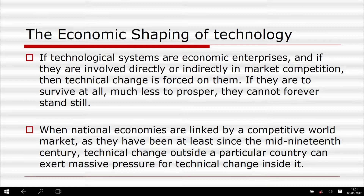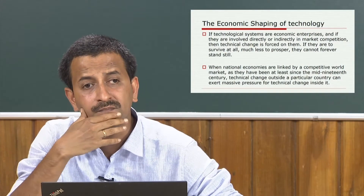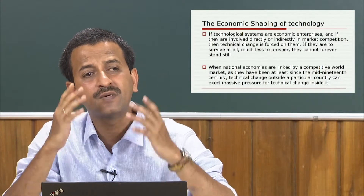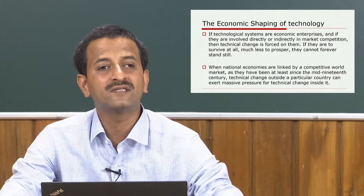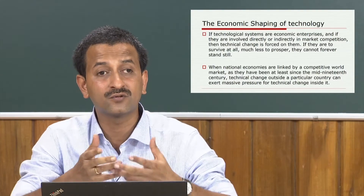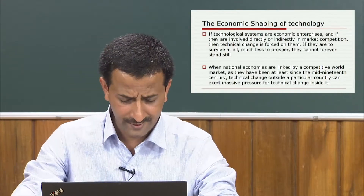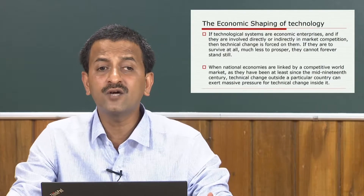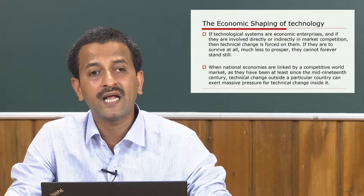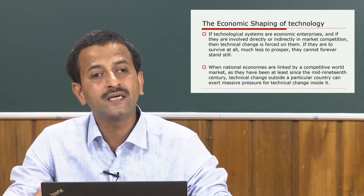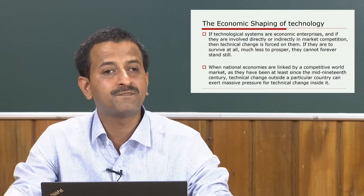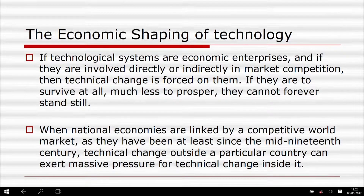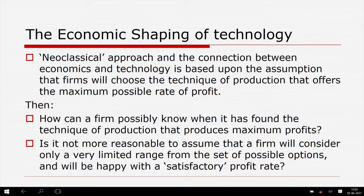Technical change is made inevitable, and its nature and direction are profoundly conditioned by this. When national economies are linked by a competitive world market — as they have been at least since the mid-19th century — technical change outside a particular country can exert massive pressure for technical change inside it. The dominant way of thinking about the connection between economics and technology is the neoclassical approach, based upon the assumption that firms will choose the technique of production that offers the maximum possible rate of profit.